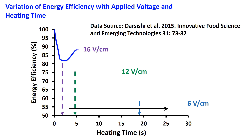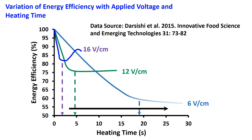Energy efficiency decreases exponentially and remains at a nearly constant value with the increase of processing time. The time to reach the constant value increases with the decrease of voltage gradient in V/cm. Therefore, higher the applied voltage, higher the energy efficiency.